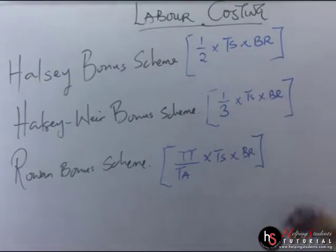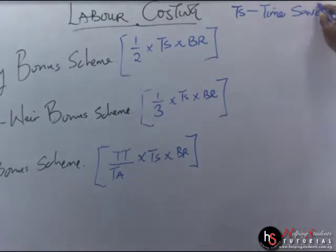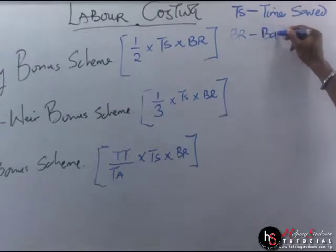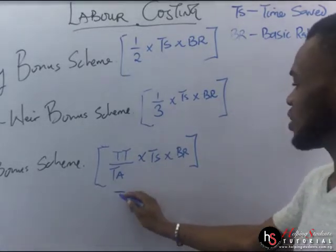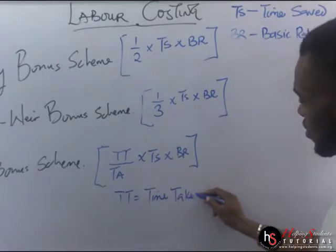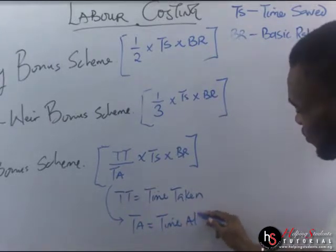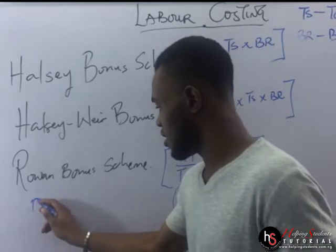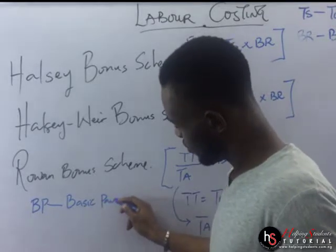When we talk about TS, TS means time saved. BR means basic rates. For the row one bonus scheme formula, TT means time taken, and TA means time allowed. We also have BP, which talks about the basic pay.